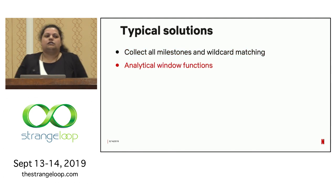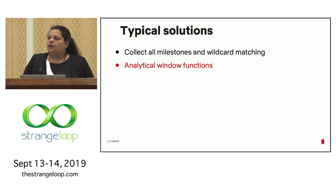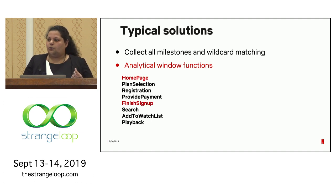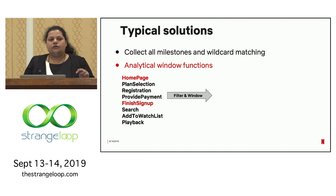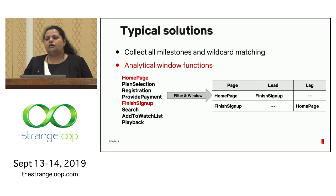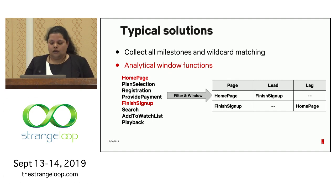Another approach is using analytical window functions — aggregations applied on a slice of data we care about. For example, if the question is how many people landed on the home page and actually finished sign up, we filter down to just those two events and apply a windowing function to figure out the preceding and following events, using functions like lead and lag. This is a slightly better approach, but it suffers from the same problem when paths get complex and you start introducing iterations, forks, or merges.